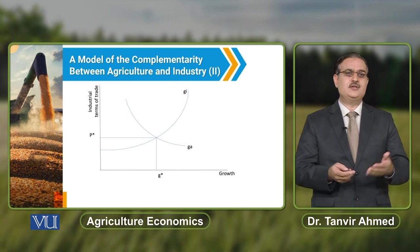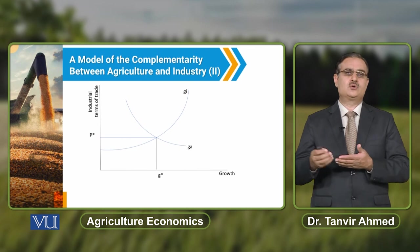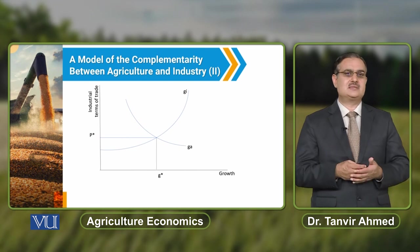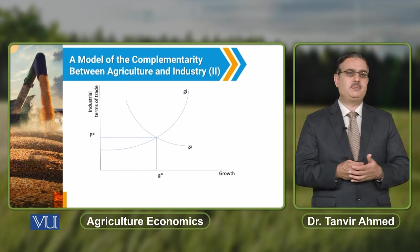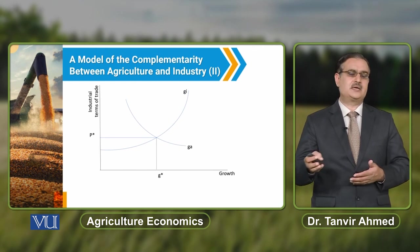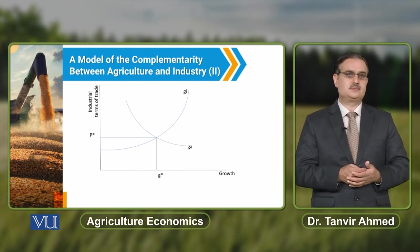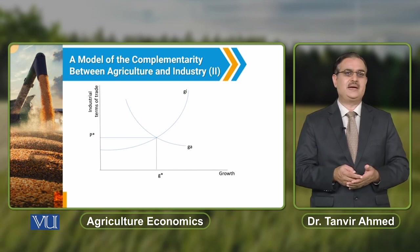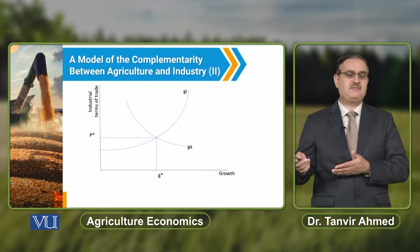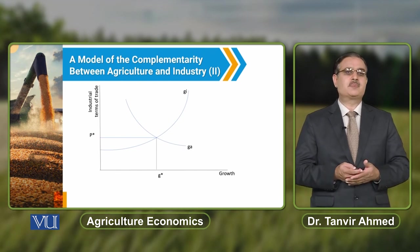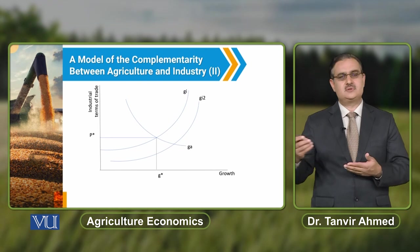The initial equilibrium occurs at the point where the industrial growth curve and the agricultural growth curve intersect each other. P* denotes the equilibrium terms of trade and G* reports the balanced growth. If we assume there is an improvement in productivity in the industrial sector, then the GI curve will shift downward.